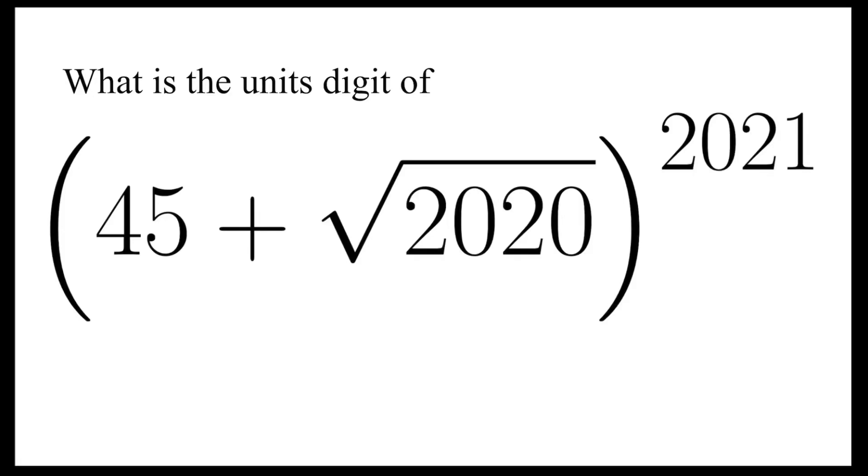In this video, we are going to take a look at this number: (45 + √2020)^2021, and we're going to find the units digit of this number. Before we move on, don't forget to give a like, subscribe to my channel, and turn on post notifications.